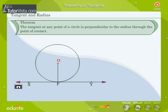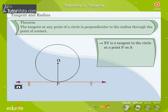Given: O is the center of a circle. XY is a tangent to the circle at a point P on it.